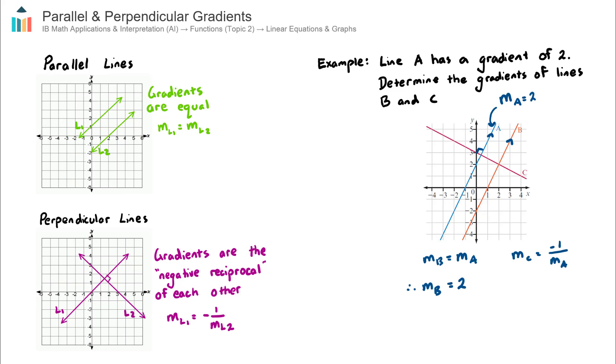So therefore the gradient of line C will be equal to negative 1 on the gradient of line A, which was 2. So therefore this will be negative 1 over 2. So there we have it. That completes that example.